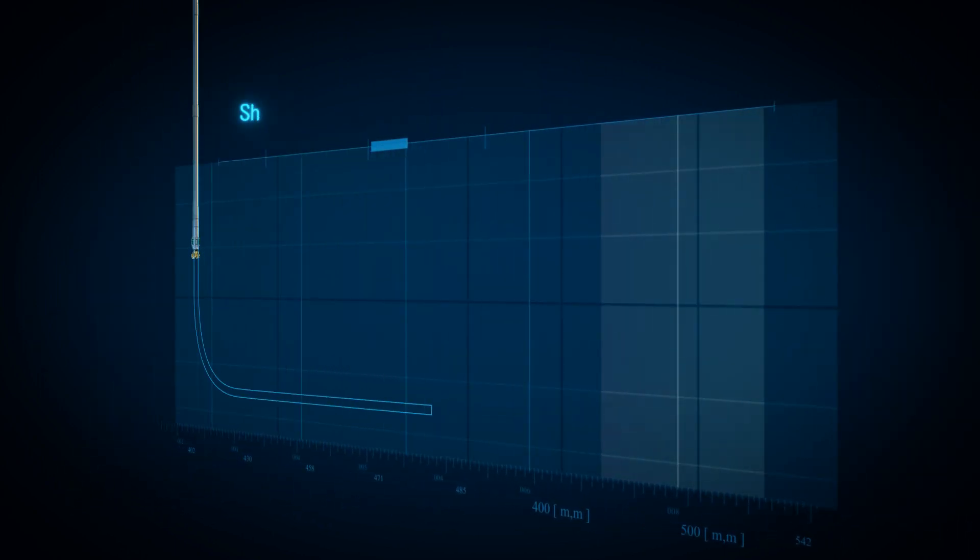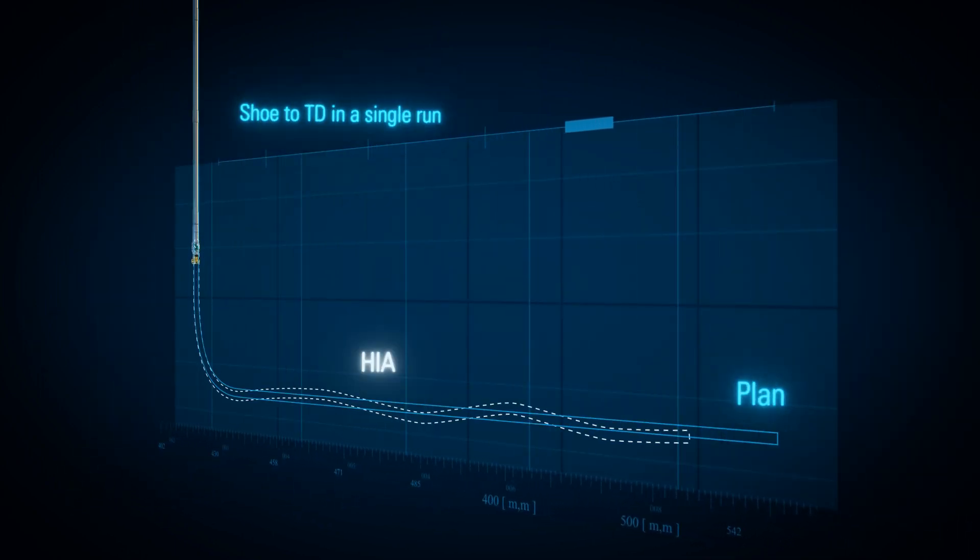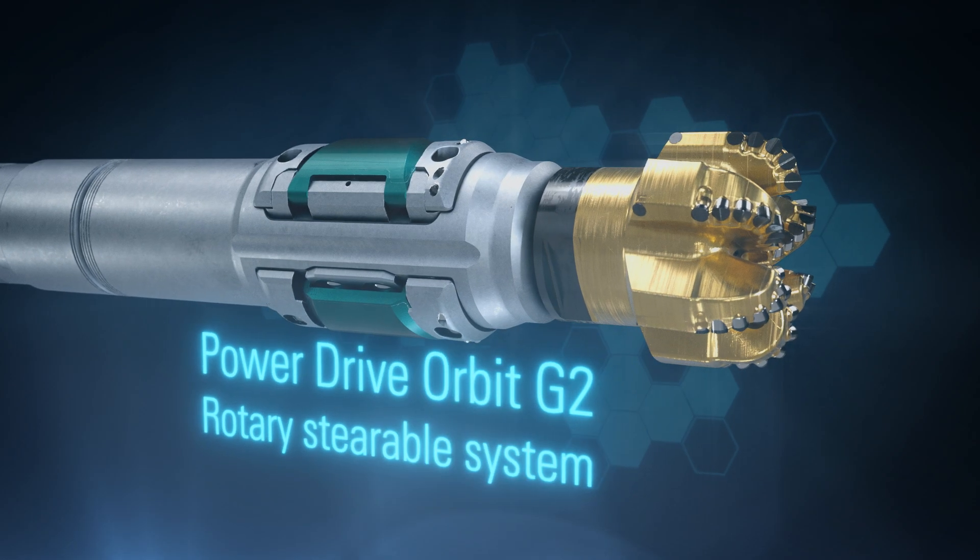For drillers who want to drill wells from shoe to total depth in a single run, this is the PowerDrive Orbit G2 RSS.